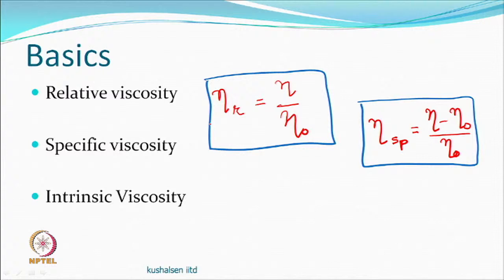Another term is specific viscosity, derived from the same values but defined as the change in viscosity relative to the solvent — essentially (eta - eta_zero) / eta_zero. These are related quantities. The intrinsic viscosity is very specific to the molecule itself.